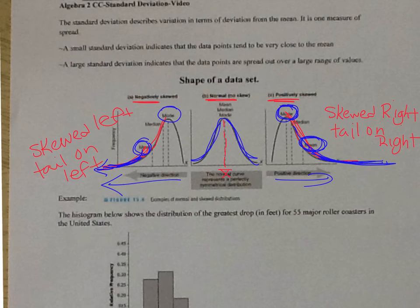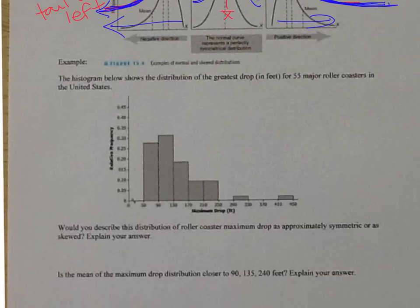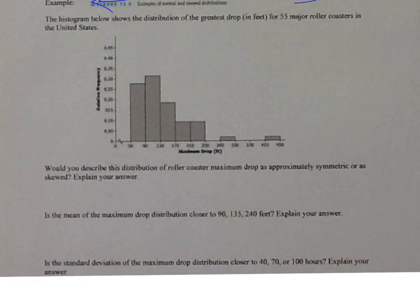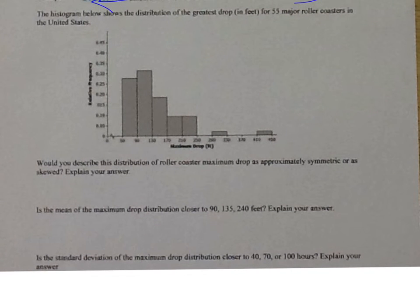Let's take a look at the example down here. The histogram below shows the distribution of the greatest drop in feet for 55 major roller coasters in the United States. Would you describe this distribution of roller coasters maximum drop as approximately symmetrical or skewed? Explain your answer. So look at this. It kind of goes like this. So this would be a skew. This would be a skew to the right.